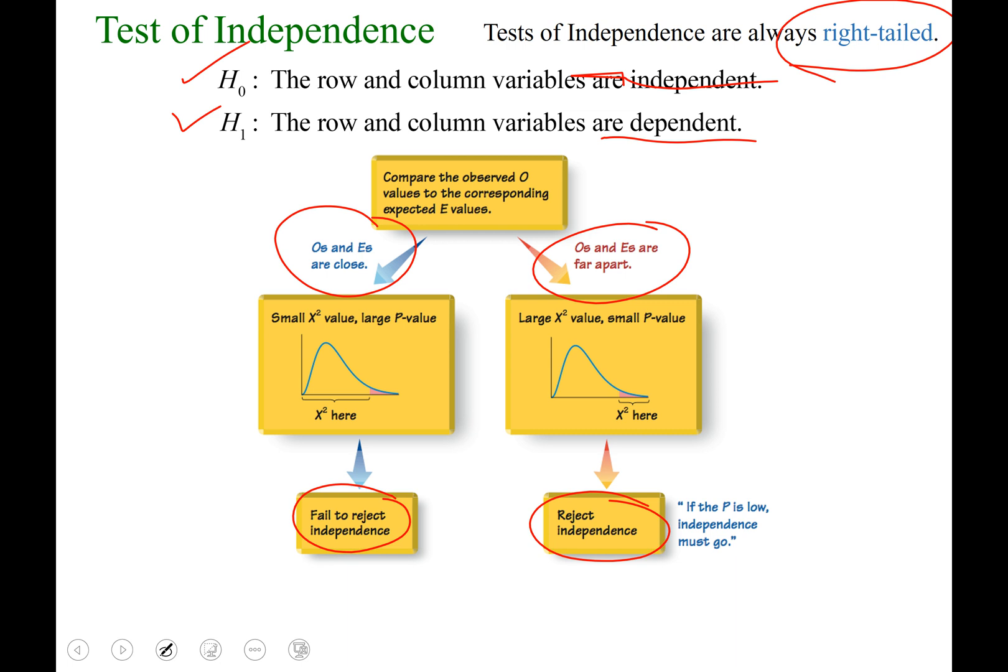Little rhyme, if p is low, independence must go. To summarize the flowchart for you, p is low, we say dependent, p is high, independent.